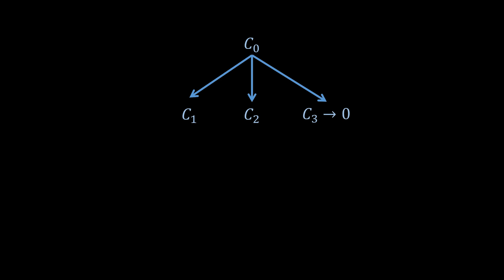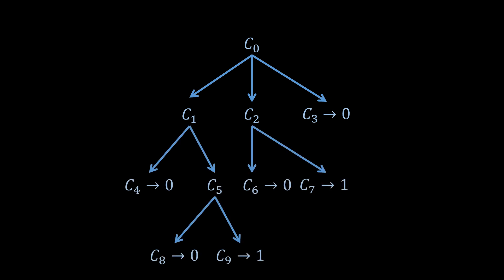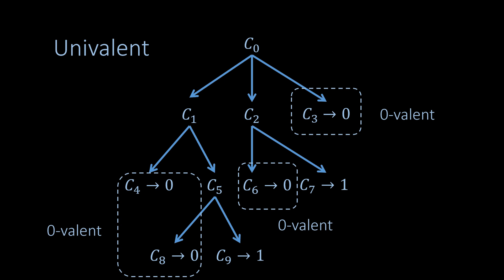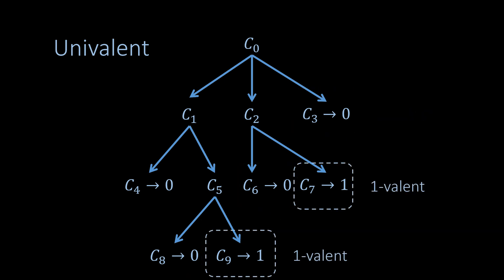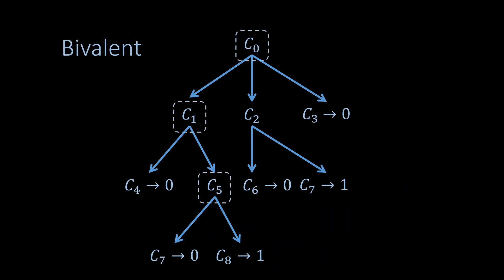Note that the messages leading to configurations C1 and C2 must also still be processed in configuration C3, but they are omitted here to keep things tidy — that is, we only show child configurations if no decision is reached yet. We say that any configuration where the decision value is clear, even if the nodes may not know it yet themselves, is univalent. More precisely, any configuration that leads to a decision of zero is called zero-valent, and all configurations that lead to a decision of one are called one-valent. Note that some configurations in this tree are not univalent — the decision depends on which messages are processed next. We call these configurations bivalent.